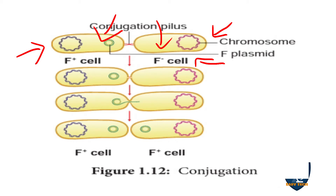Now the pili form a conjugation tube — a connection which links the two bacteria. The pili can be called sex pili. The connection starts and a channel is formed. After the formation of the channel, the plasmid replicates and allows a segment to enter into the F minus bacterium.